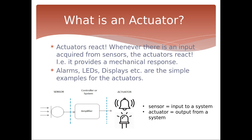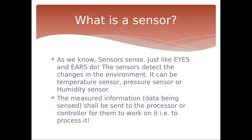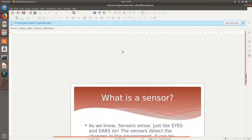Here is a simple example: the sensor senses the data, it goes into the controller or processor, it processes it, and in case of a deviation or an alert to be raised, it will immediately respond through the alarm or through an LED. So — sensors sense, actuators react. That's it.